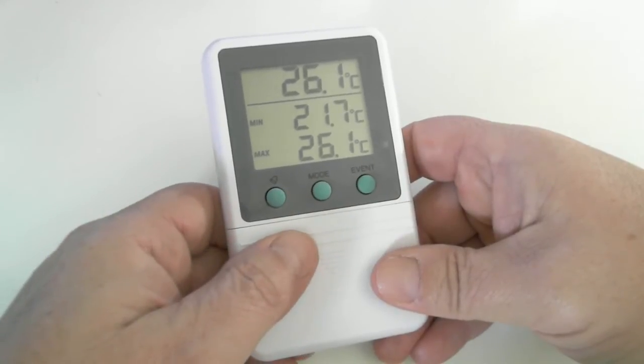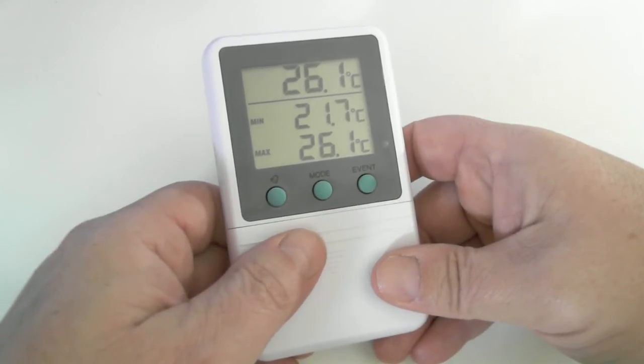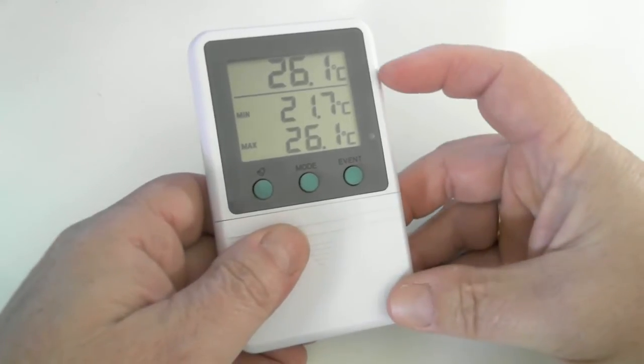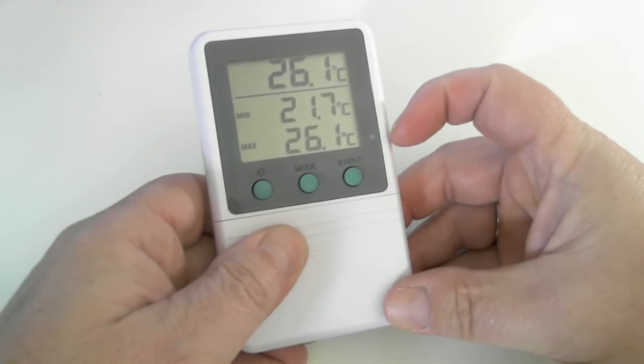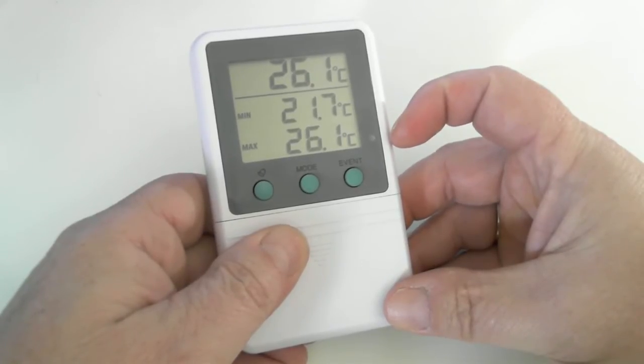The LCD screen is currently showing the main display which is showing the current temperature at the top, the minimum recorded temperature in the center, and the maximum recorded temperature at the bottom of the screen.